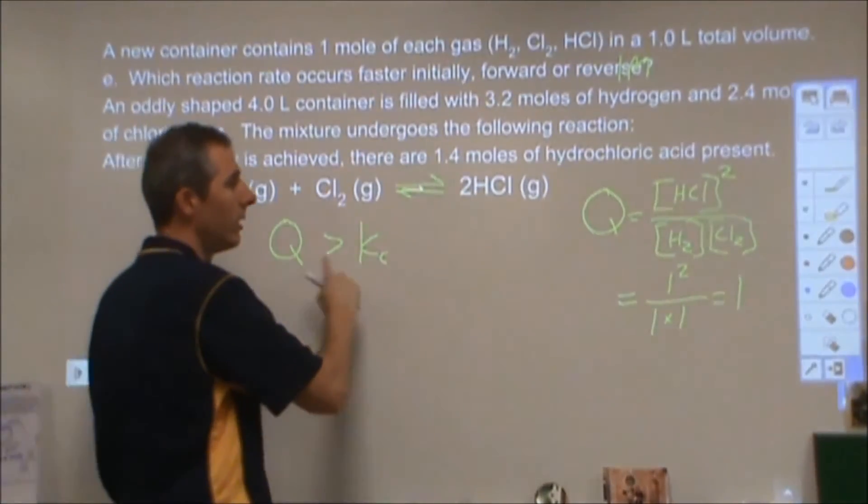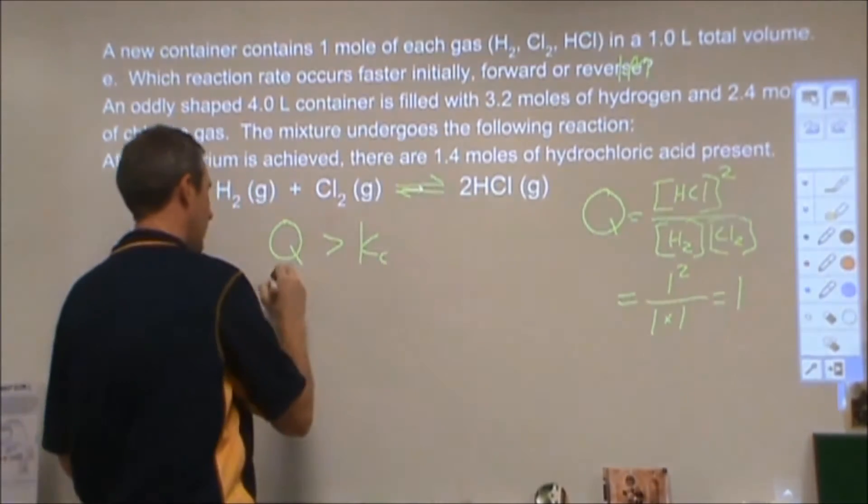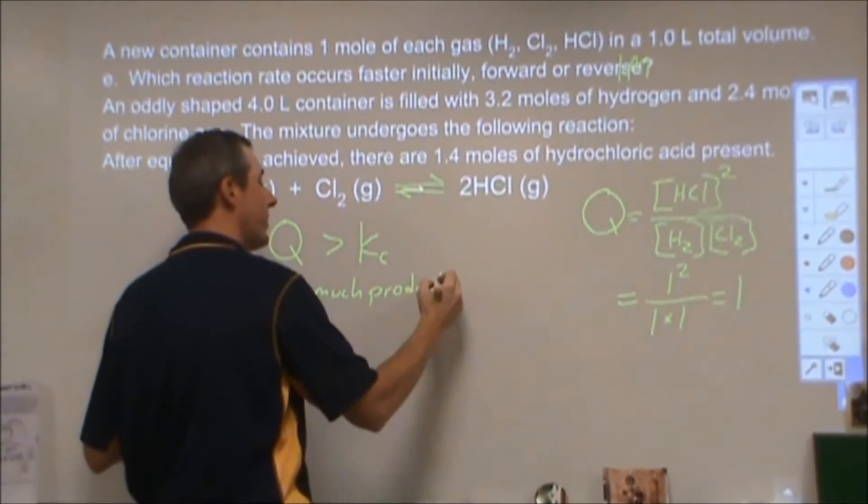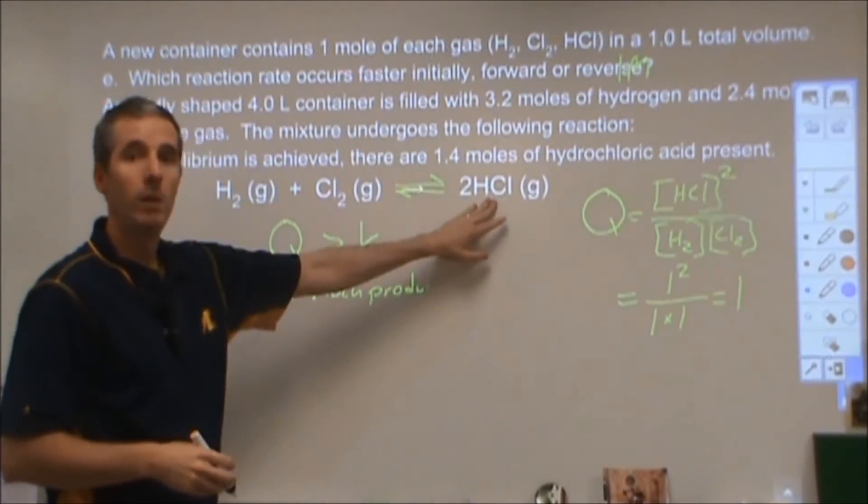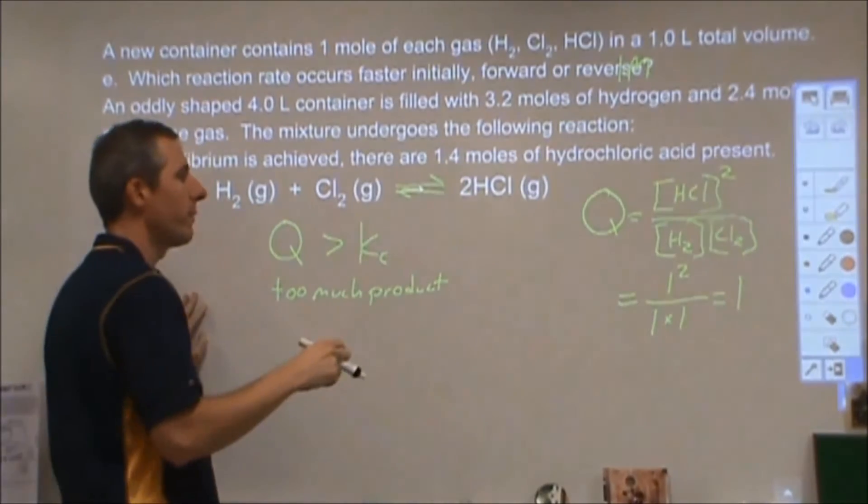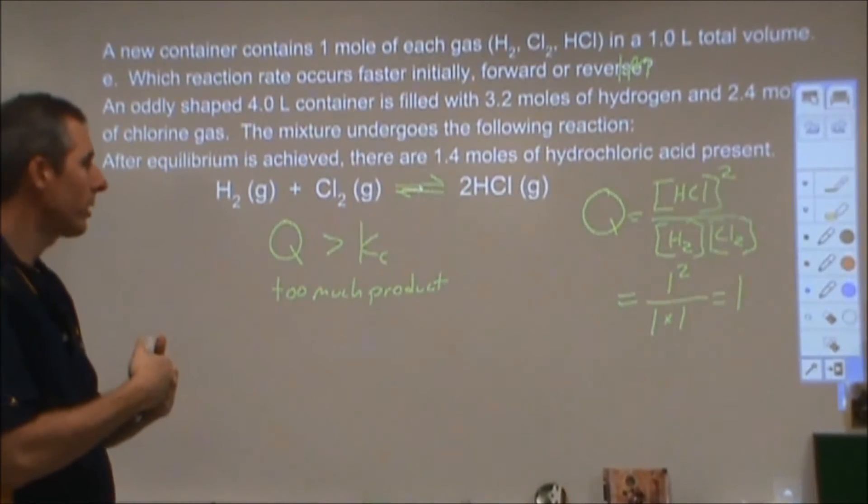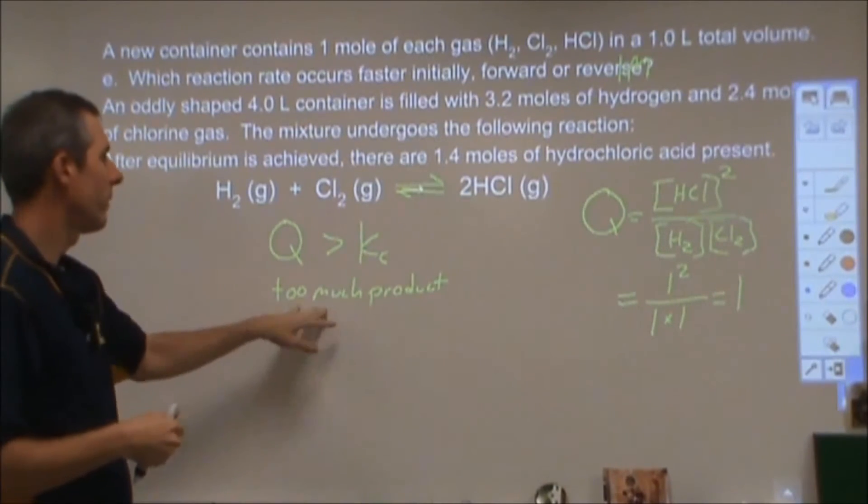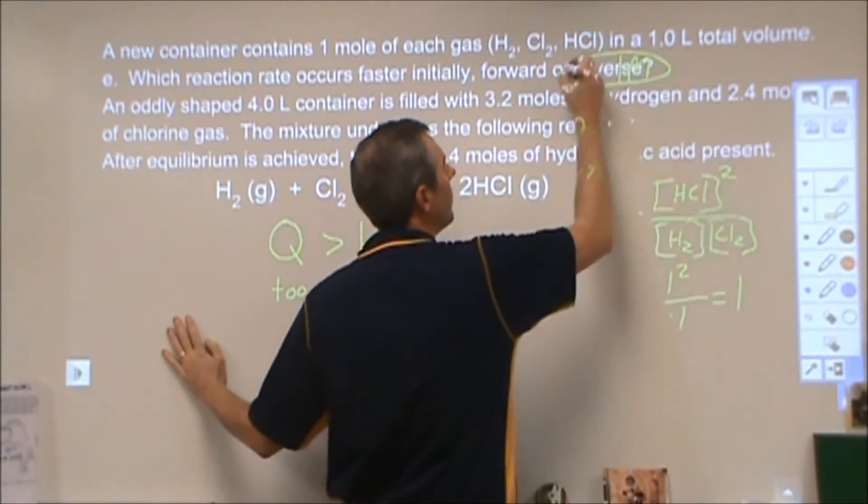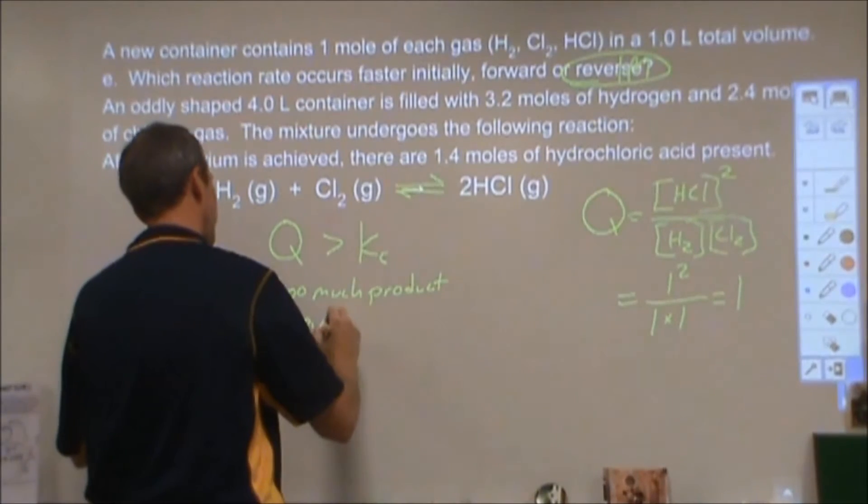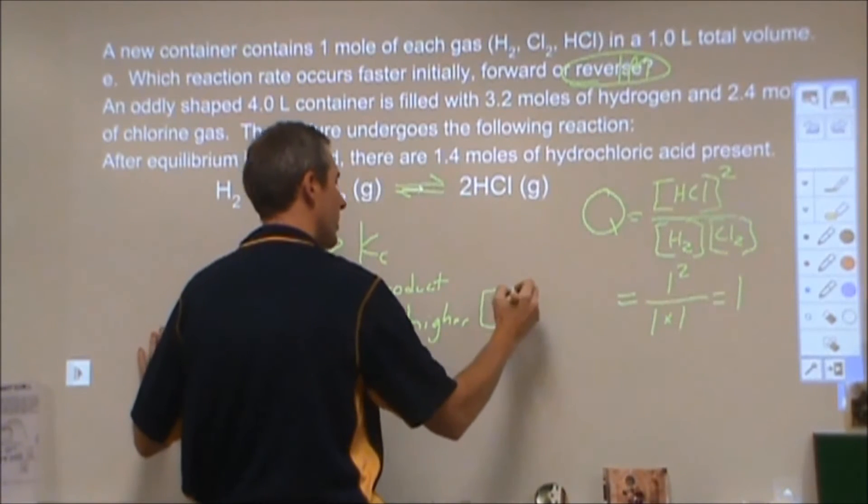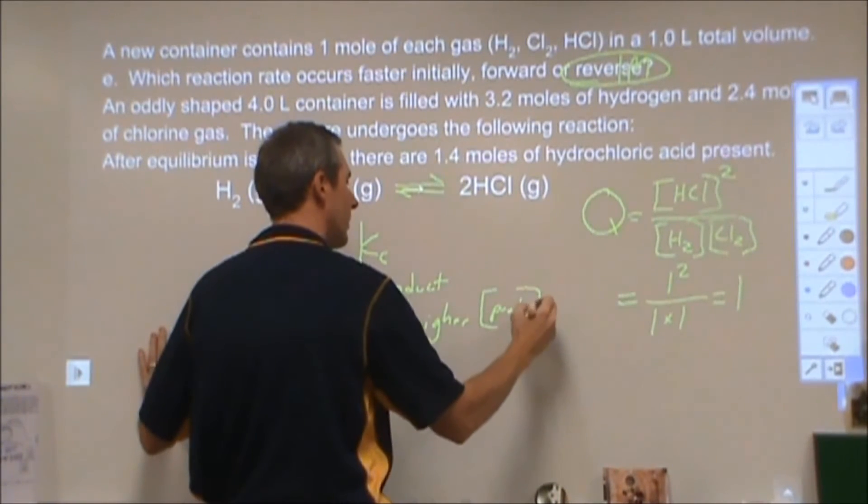In terms of rates, what that means, if we have too much of this and too little of this, that means that my forward rate is going to be slower and my reverse rate is going to be faster. Because having too much product is leading to more collisions and a faster kinetics, a faster reaction rate. Therefore, which reaction rate occurs faster? It would be the reverse occurs faster due to higher concentration of product than I would see at equilibrium.